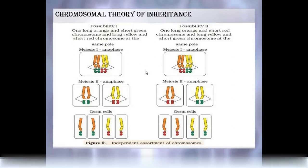There are two possibilities. Possibility one: long orange and short green chromosome, or long yellow and short red chromosome. If we look at this, we see red and green. Understanding the color difference — this is one possibility and this is another possibility. Here we have orange and green, here orange and red, here yellow and green. These are the possibilities.